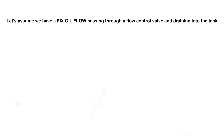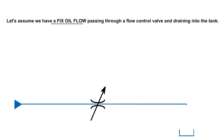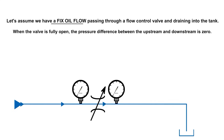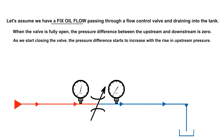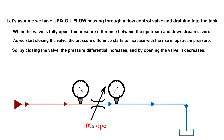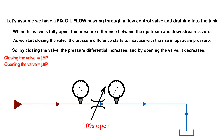Let's assume we have a fixed oil flow passing through a flow control valve and draining into the tank. When the valve is fully open, the pressure difference between the upstream and downstream is zero. As we start closing the valve, the pressure difference starts to increase with the rise in upstream pressure. So by closing the valve, the pressure differential increases, and by opening the valve, it decreases.